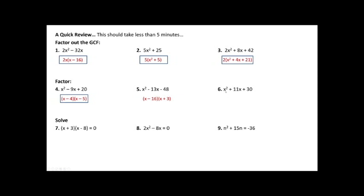One more: notice again I have x squared, so I know it's going to be x and x. I need two numbers that multiply together to give me 30 and add up to be 11 — that's going to be 6 and 5. I knew the signs would both be the same because of the sign on the last term, and the middle sign tells me which sign to use.